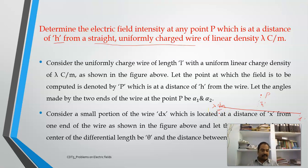This is a line charge which has lambda coulomb per meter. So if I take 10 meters of length, it is 10 lambda. If I take 20 meters of length, then it is 20 lambda coulomb. So that is the question.